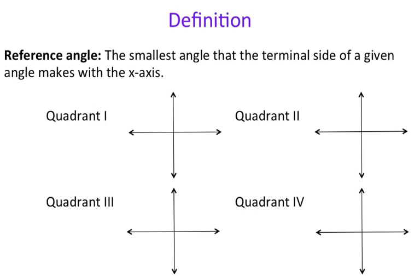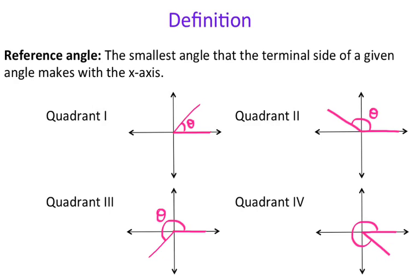We have four quadrants, and depending on the quadrant you're in, you're going to do certain things to find the reference angle. Here is the initial side of your angle, and here's an angle in the first quadrant — there's your theta. Quadrant two: here's my initial side, there's my terminal side, there's my angle, theta. Quadrant three: initial and terminal side, there's my angle. And quadrant four: initial side, terminal side, and there's my angle.